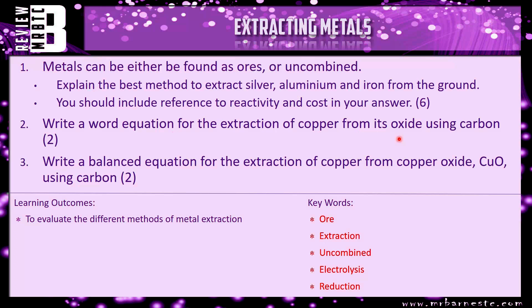That pretty much sums up this video. All that's left is the review, which is metals can be either found as ores or are uncombined. Explain the best method to extract silver, aluminum and iron from the ground. Similar questions to the one that you saw previously, just with different metals. And then you've got two equations to write. One's a word equation for the extraction of copper using carbon. And then the extraction of copper from copper oxide using carbon, write the balanced equation for it. And that ends this video.